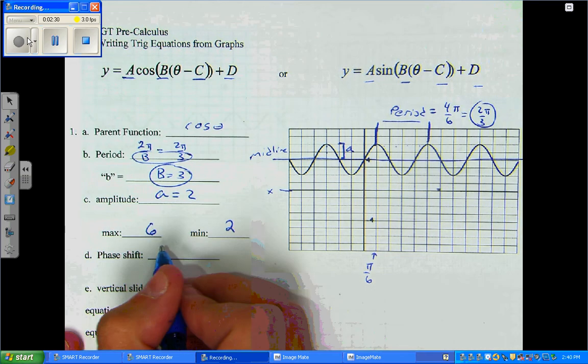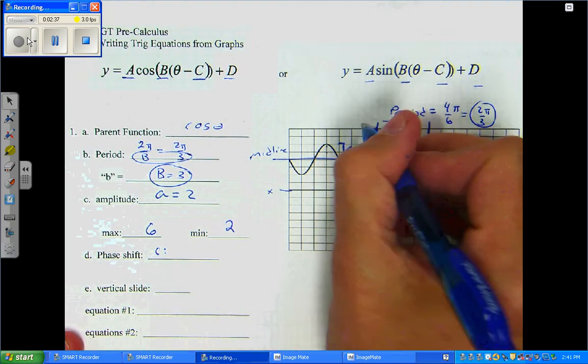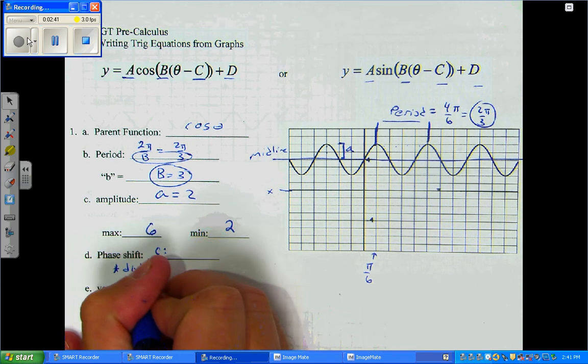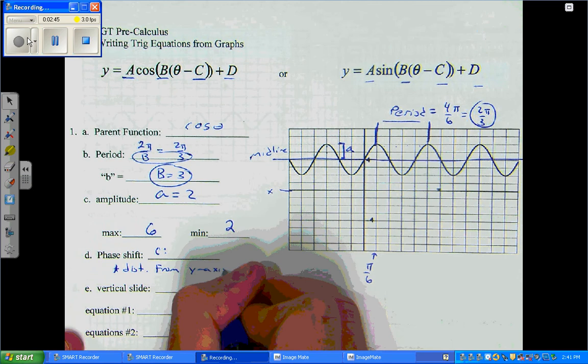The phase shift will be the hardest one to get, C. To make it easier, we're going to use cosine. Because, to get the phase shift, this is just going to be the distance from the y-axis to the first peak.